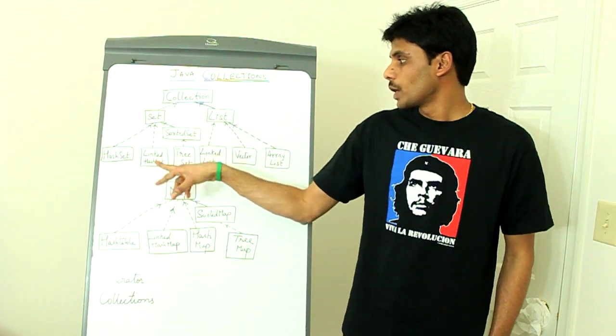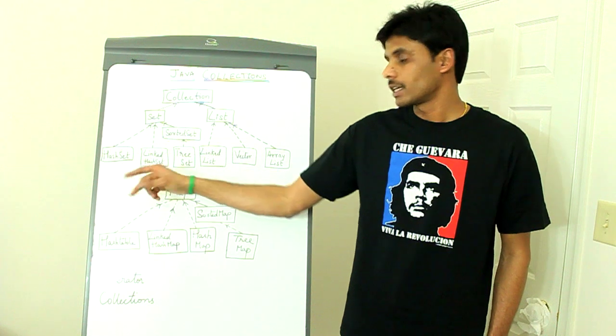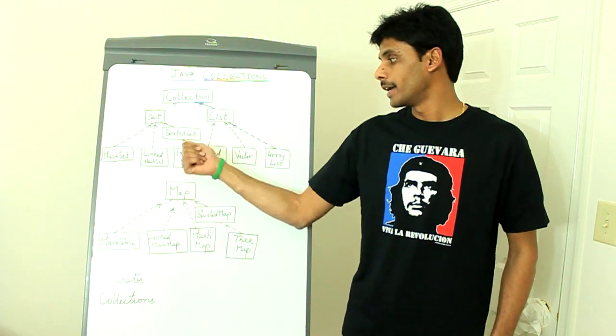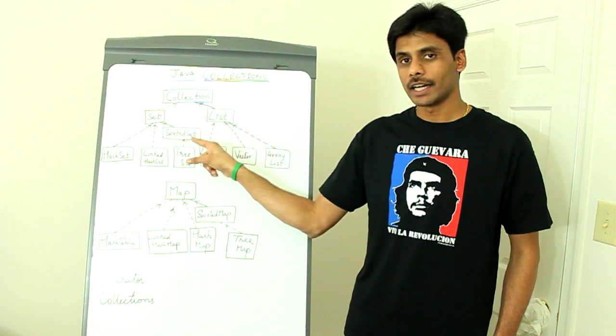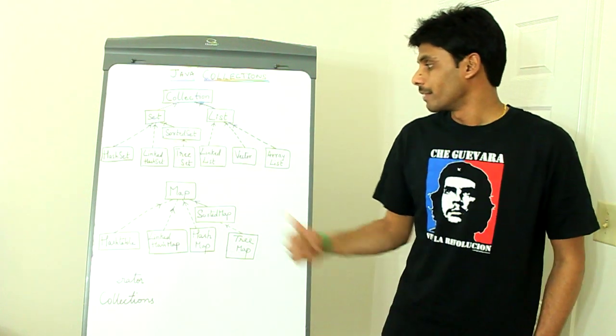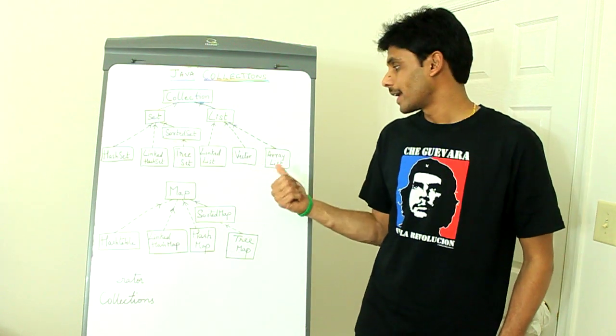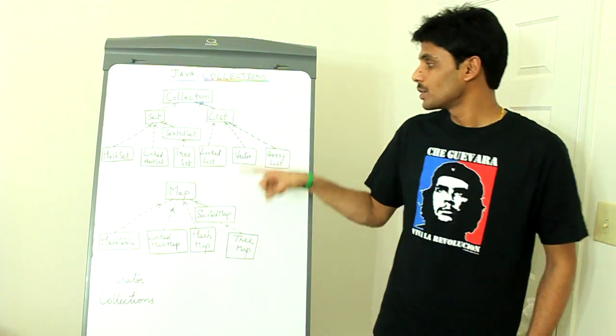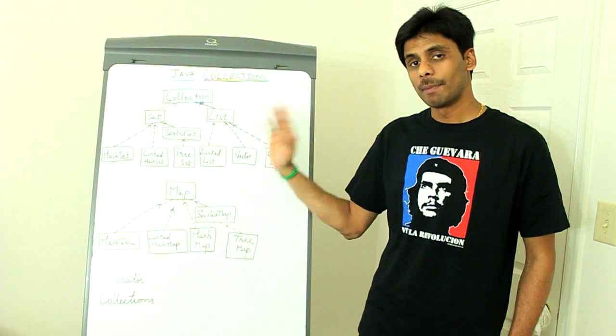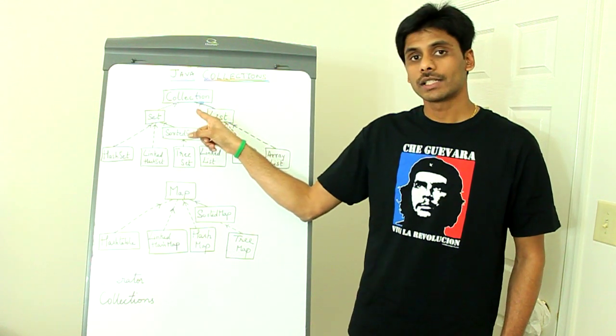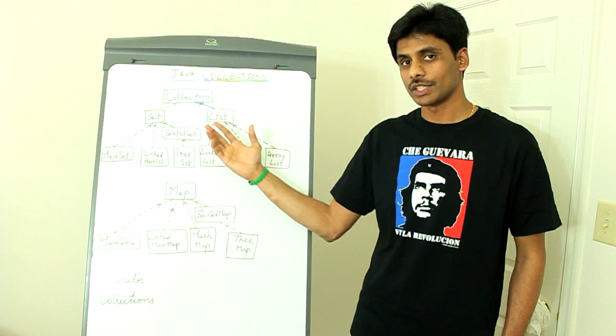Within Set you have HashSet, LinkedHashSet, and then a TreeSet which implements the SortedSet interface. And within List you have LinkedList, ArrayList, and Vector. As you can see, the dotted lines mean implementation, whereas the solid lines mean inheritance or extension.